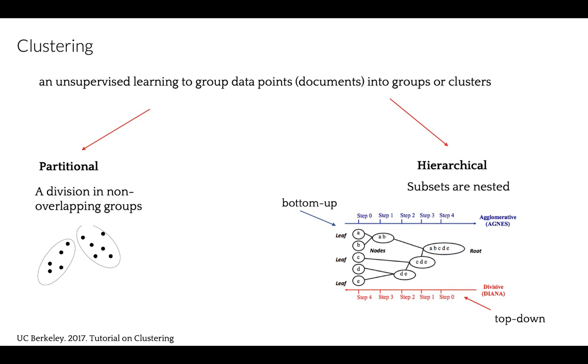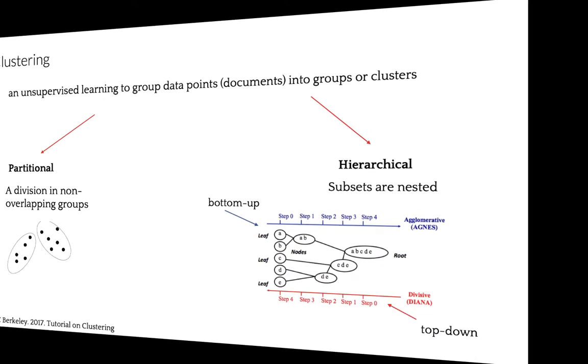It begins with the root, where all objects are included in a single cluster, and at each step the most heterogeneous cluster is divided into two. The process is iterated until all objects are in their own clusters. Note that sometimes agglomerative clustering is good at identifying small clusters, while divisive clustering is good at identifying large clusters.